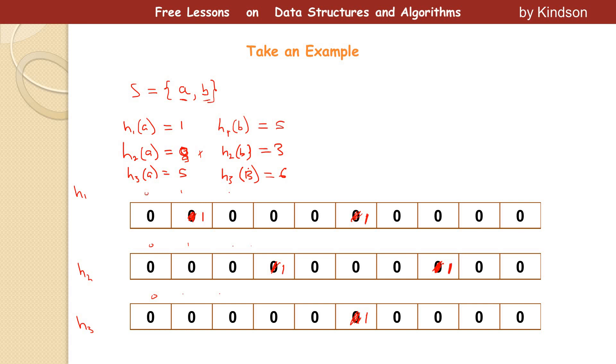And H3 of B gives us six, zero, one, two, three, four, five, six. Alright. So this is how basically a Bloom Filter works. So you can say this is in session. We just talked about insertion now. Right.